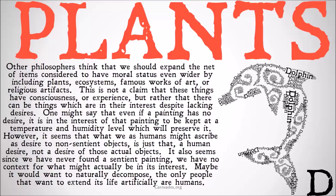However, it seems that what we as humans might ascribe as desire to non-sentient objects is just that — a human desire, a derivative status — not a desire of those actual objects. We are mapping our desire to keep trees around as a desire that those trees actually have, while it doesn't seem that it's necessarily in their interest or not to keep existing. Since we've never found a sentient painting, we have no context for what might actually be in its interest. We don't know that it's in the interest of a tree to keep on living. It might actually be in the interest of a tree to die, decompose, and provide food for its seeds and offspring. Maybe a painting would even want to naturally decompose — the only people that want to extend its life artificially are humans.